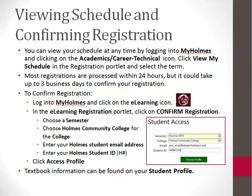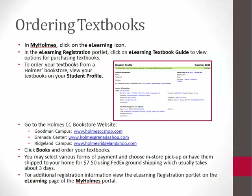To confirm your registration, log in to myHolmes and click on the eLearning icon. In the eLearning registration portlet, click on Confirm Registration. This will take you to the Student Profile page. To log in to your student profile, you will need to select the current semester, find Holmes Community College in the list of colleges, enter your home student email address, and enter your home student ID number. Once you have completed this information, click Access Profile.